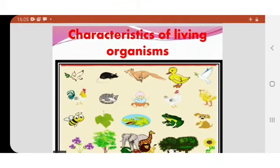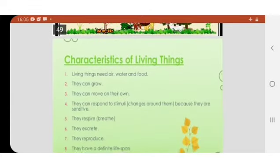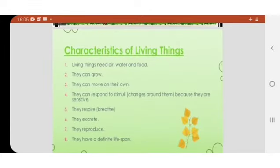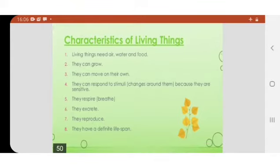Now, the last topic of the chapter — we will discuss characteristics of living organisms. Living things need air, water and food. They can grow. They can move. They respond to stimuli. They respire — that is breathing. They excrete. They reproduce. And they have some definite lifespan.